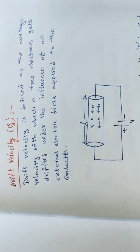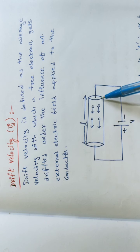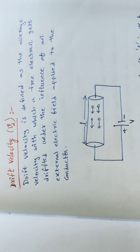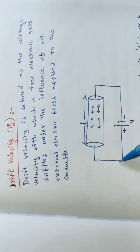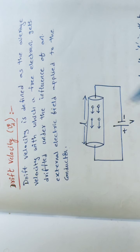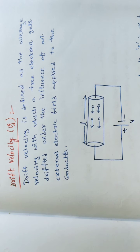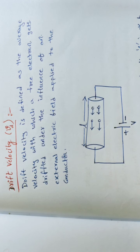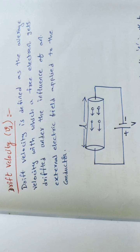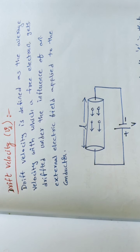Consider one conductor having length L and cross-sectional area A. Initially, the electrons in that conductor are in a rest position. If we apply a potential between the free ends of the conductor using a battery — with the positive terminal on one side and the negative terminal on the other — the electrons will be drifted under the influence of this potential. Those moving electrons acquire a velocity, which we treat as drift velocity.